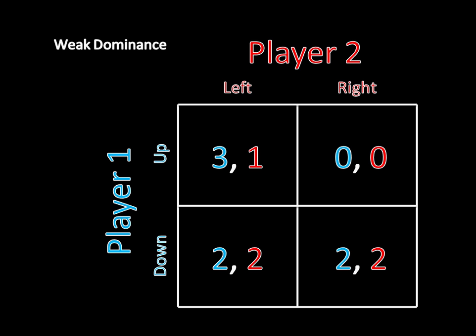Compare player two's left option with her right option. If she knows player one is going to go up, then left is better than right because one is greater than zero. Now if player one is going to go down, it doesn't really matter what she picks — she's stuck getting two. So in one case left is better, and in the other case it's equally as good.